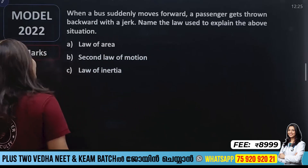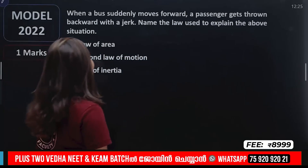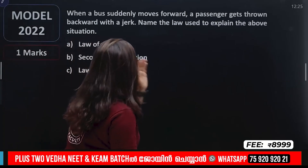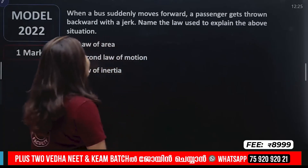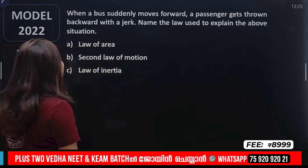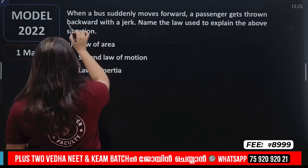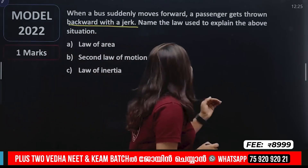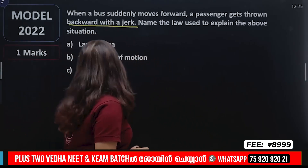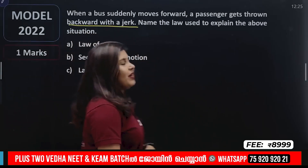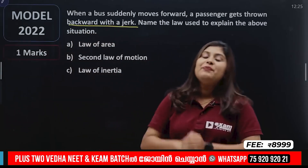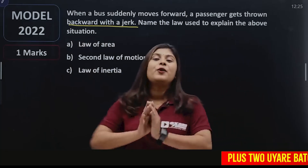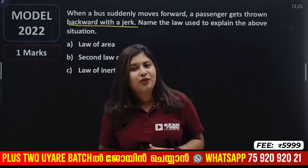Where is the first question? When a bus suddenly moves forward, a passenger gets thrown backward with a jerk. Name the law used to explain the above situation.